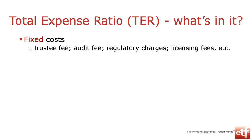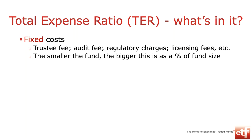What's in a total expense ratio? First of all, there are some fixed costs associated with managing and running an investment fund such as a collective investment scheme. The fixed costs typically are things like your trustee fees, audit fees, regulatory charges, licensing fees, these sort of things. Clearly, because it is a fixed cost, the smaller the fund, the bigger that fixed cost component will be as a percentage of the total size of the fund.